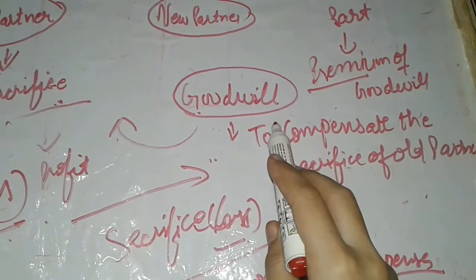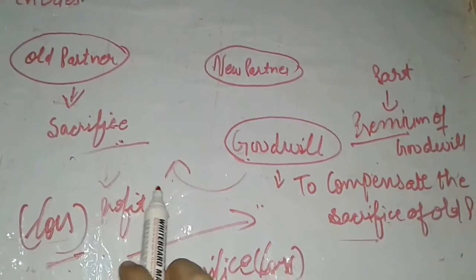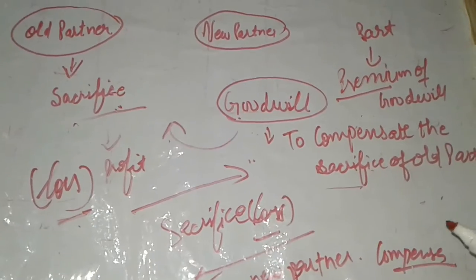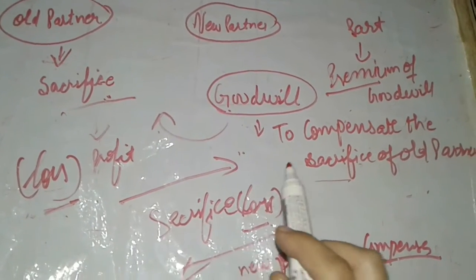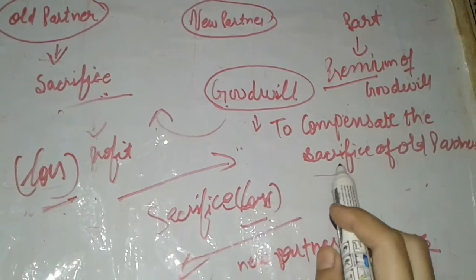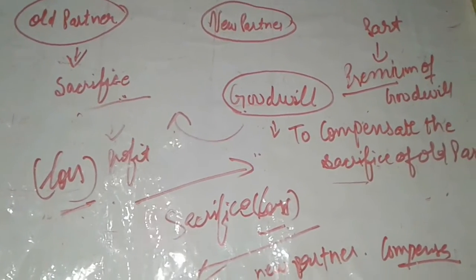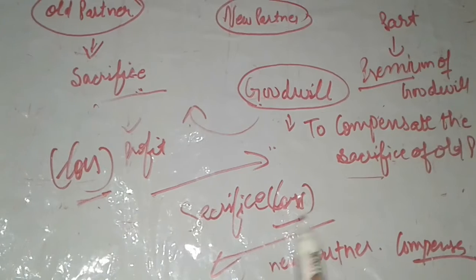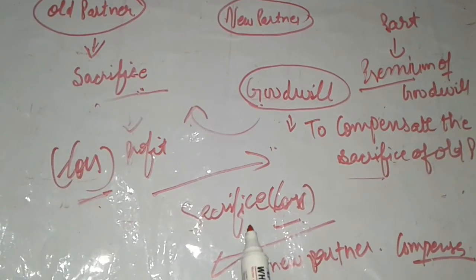Whatever goodwill exists in the partnership firm, the new partner takes a part or portion to compensate the old partners. Whatever cash is brought as compensation, we call it the premium of goodwill. The new partner brings goodwill in the form of cash to compensate the old partners, and to record this transaction in the books, you need to post an adjustment of goodwill.